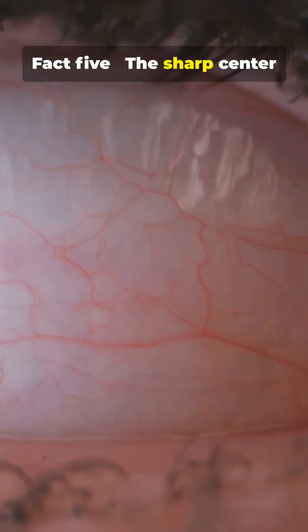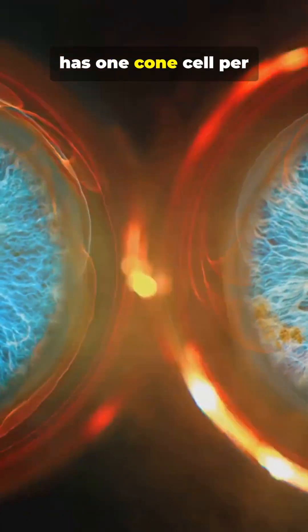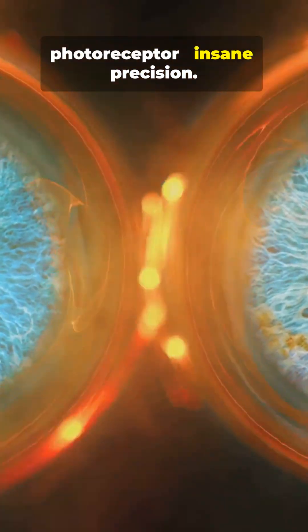Fact 5. The sharp center of your vision, the fovea, has one cone cell per photoreceptor. Insane precision.